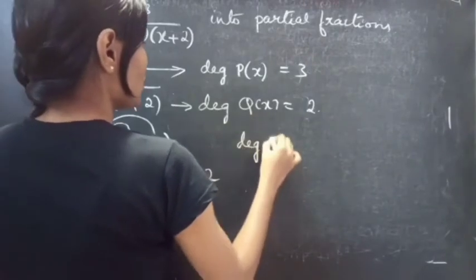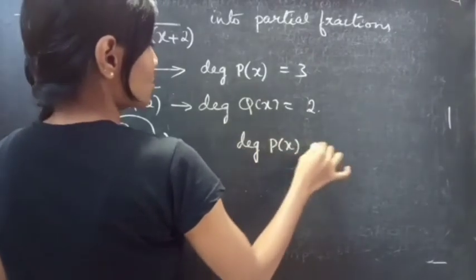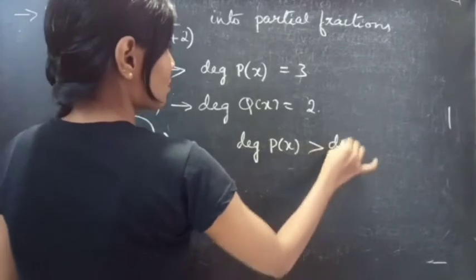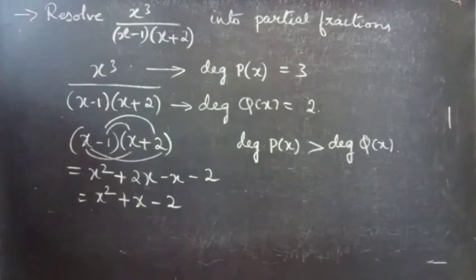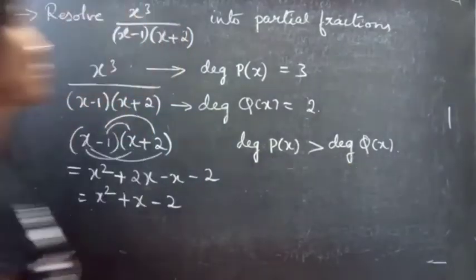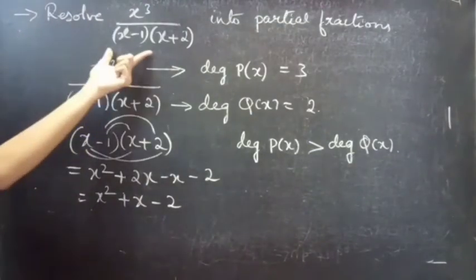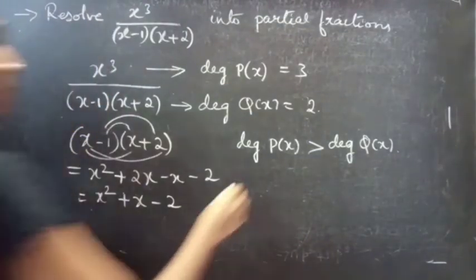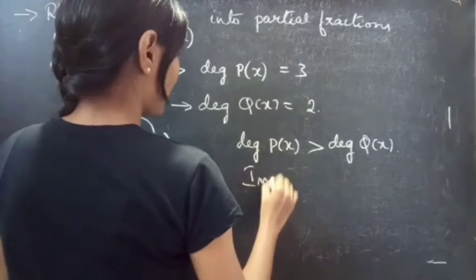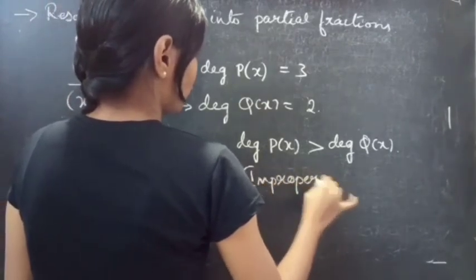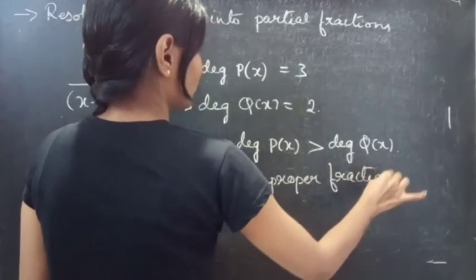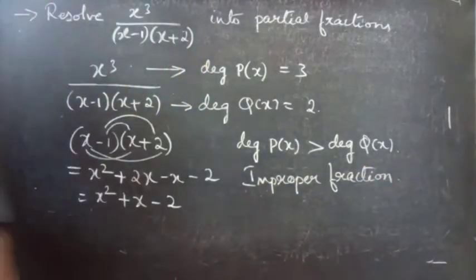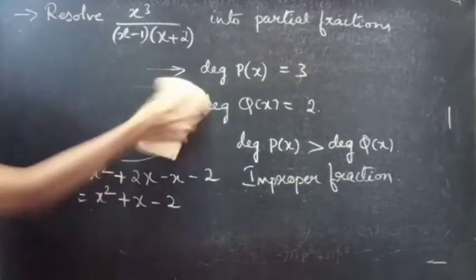Here the degree of p(x) is greater than the degree of q(x). Since degree of p(x) is greater than degree of q(x), we can say that the given fraction is an improper fraction. So we have to reduce it to a proper fraction.